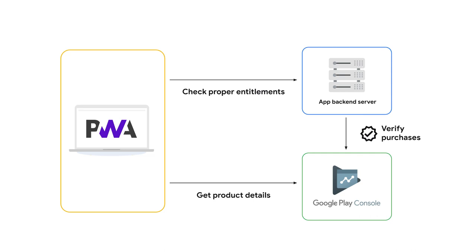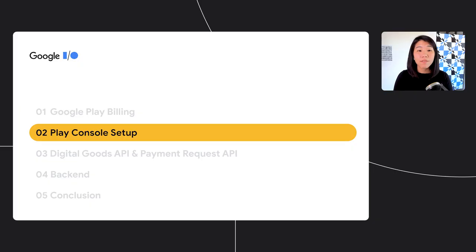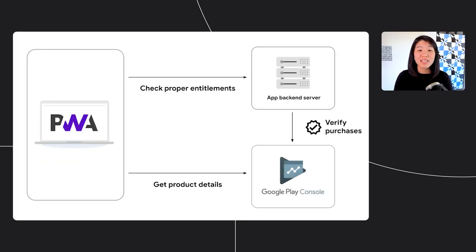If you're ready to start integrating Play Billing into your progressive web app, there are three important components to implement and set up: the Google Play Console, the web billing APIs in your PWA, and the backend server. First, let's look at the Play Console, which serves as an interface to Google Play. Most importantly, it's also how you will add your in-app products and subscriptions for your app.